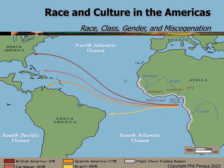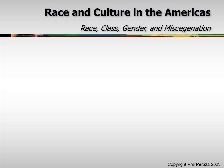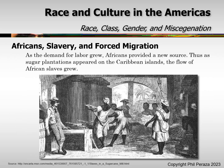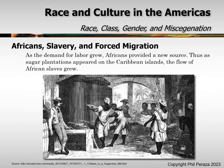Here are the slave routes to the Americas — you can see there routes to South America and to North America. As the demand for labor grew, Africans provided a new source. Thus, as sugar plantations appeared on the Caribbean islands, the flow of African slaves grew.